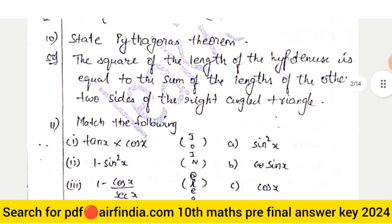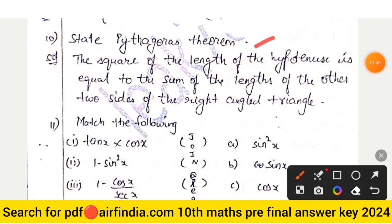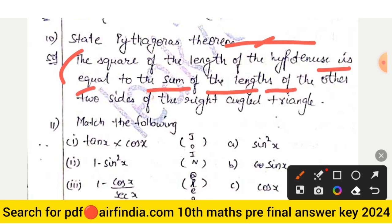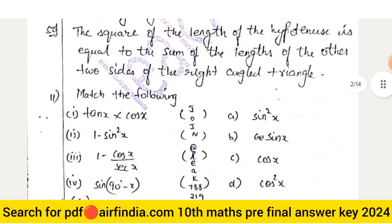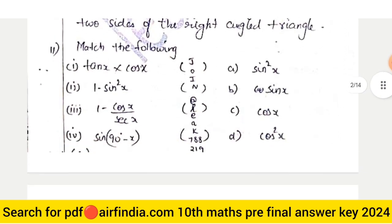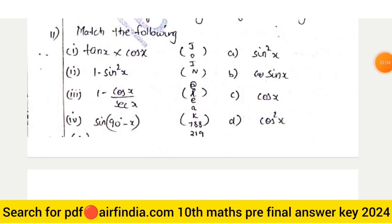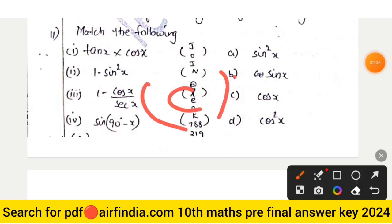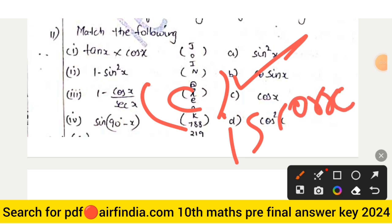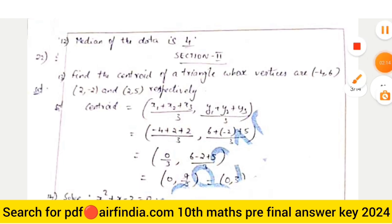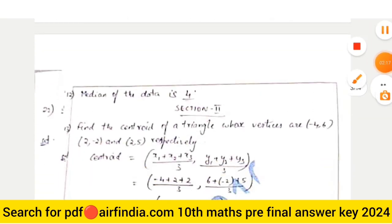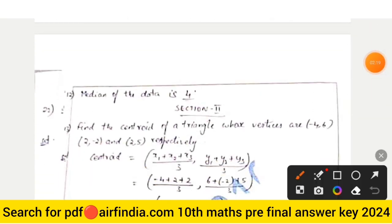Question number 9: state Pythagoras theorem. The square of the length of the hypotenuse is equal to the sum of the squares of the lengths of the other two sides of a right-angle triangle. Question number 11 match the following: option number C is correct. Question 12 answer: the median of the data is 4.